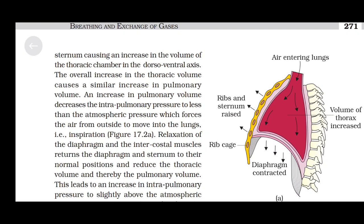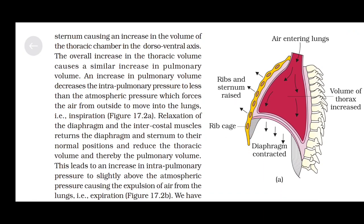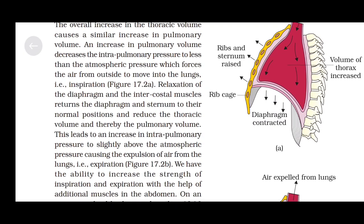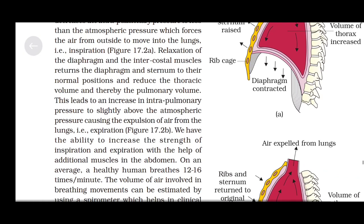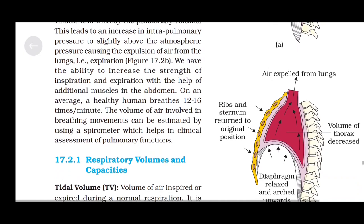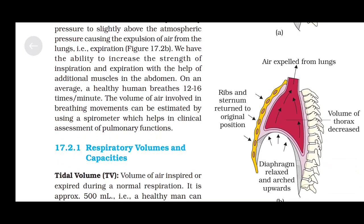Relaxation of the diaphragm and the intercostal muscles returns them to their normal positions and reduces the thoracic volume and thereby the pulmonary volume. This leads to an increase in intrapulmonary pressure to slightly above atmospheric pressure, causing the expulsion of air from the lungs — that is, expiration. We also have the ability to increase the strength of inspiration and expiration with the help of additional muscles in the abdomen.